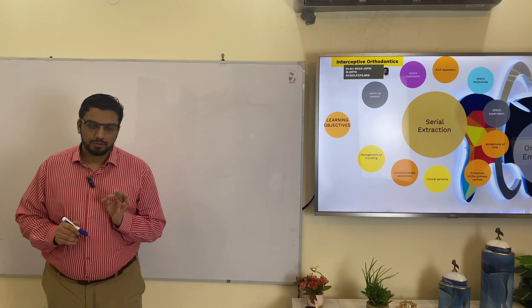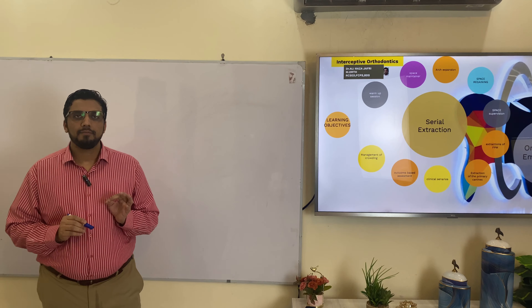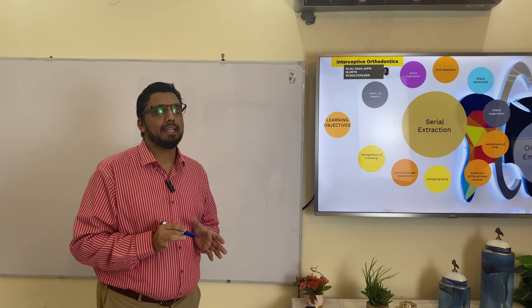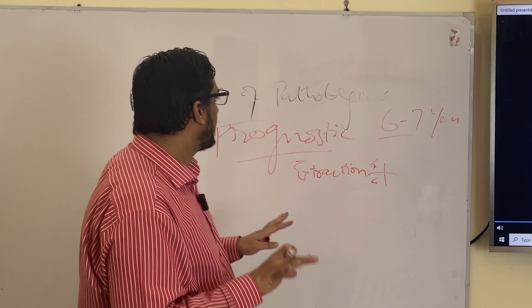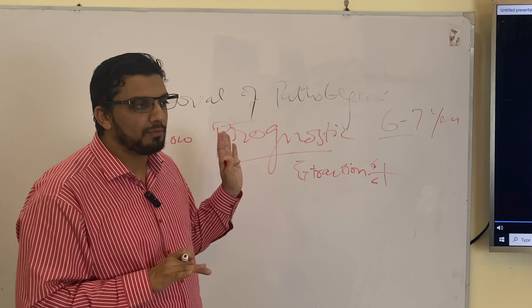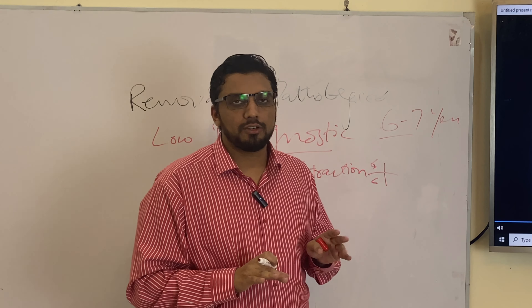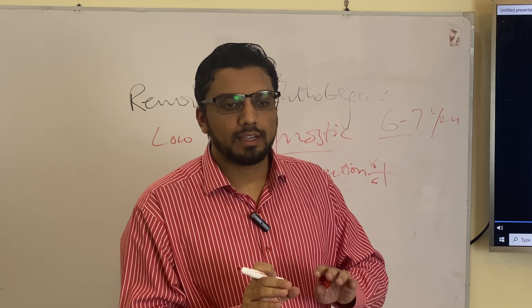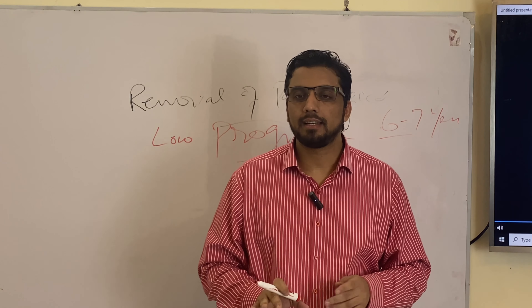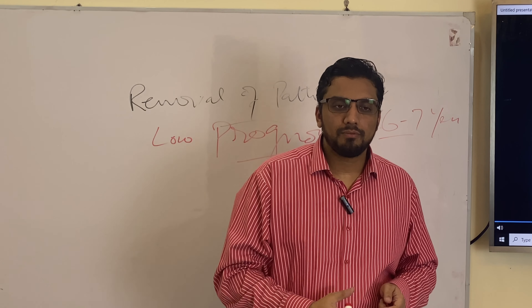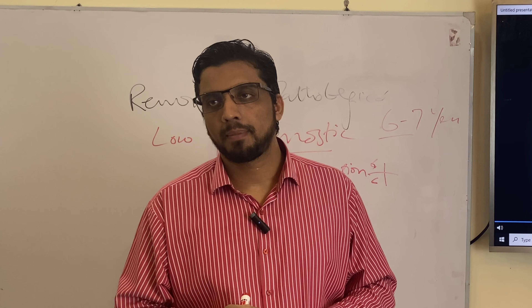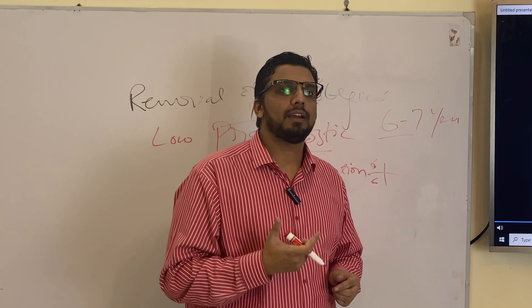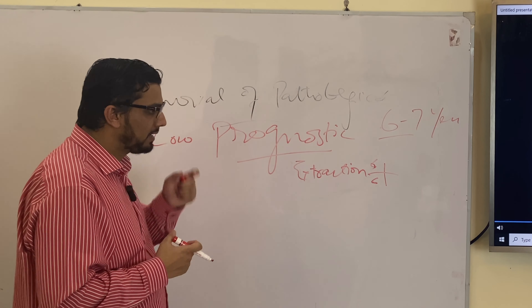Today we are going to study when and how we plan the extraction of the first permanent molar in children. One indication is getting rid of a tooth that is a cause of pathology in the oral cavity, achieving a neat and clean occlusion. The tooth has gross caries because of its early eruption timing, when children are not practicing good oral hygiene.